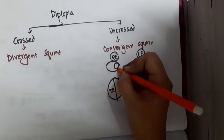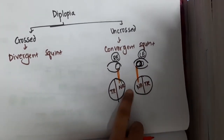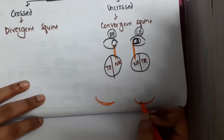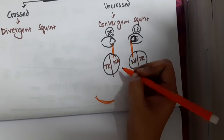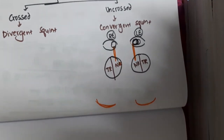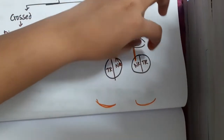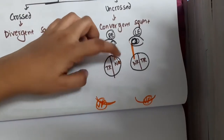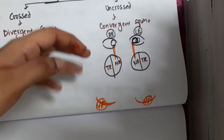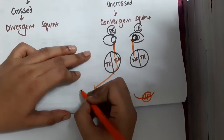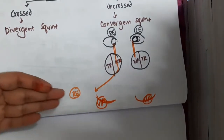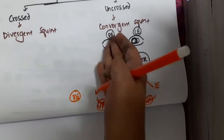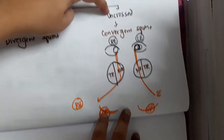Now, the fibers come from the nasal part. The nasal visual field — think of it as the visual field. The image of the nasal retina will be produced towards the temporal side. So the right eye image is towards the temporal side, whereas the image of the left eye nasal retina will be towards the left eye temporal side. So here, the images are not crossing each other, and as a result this is called uncrossed diplopia.